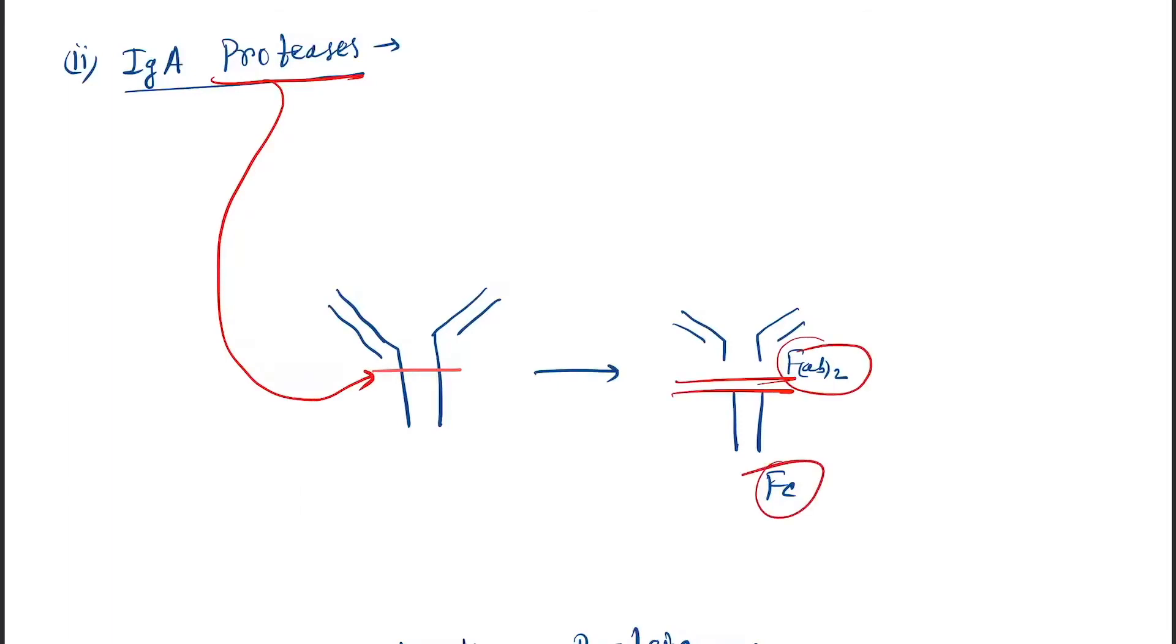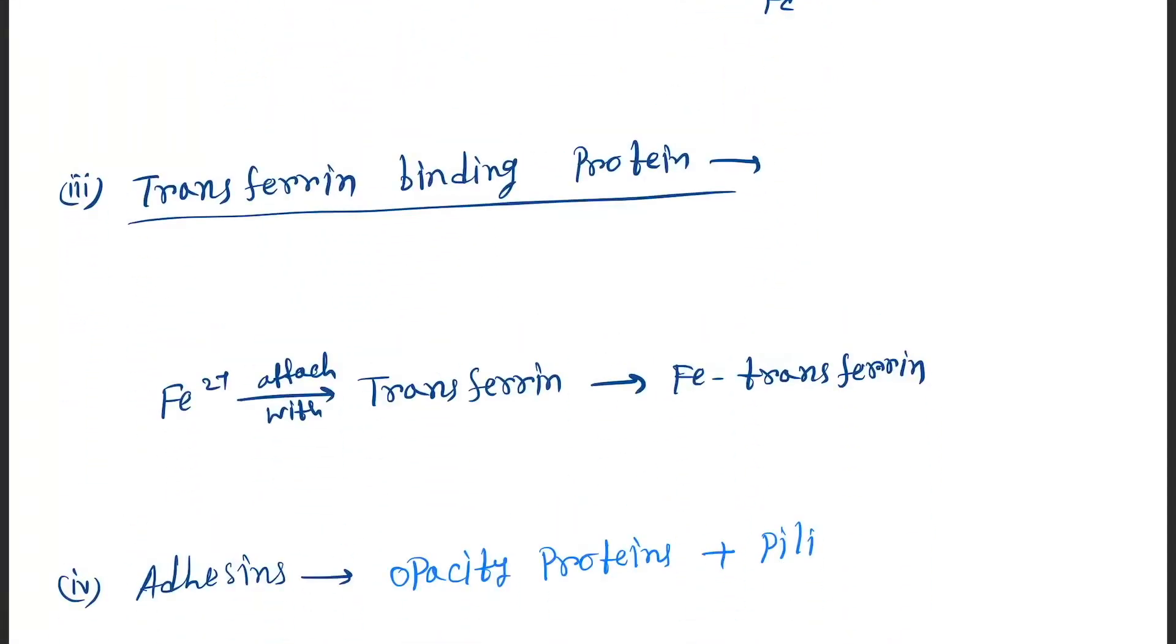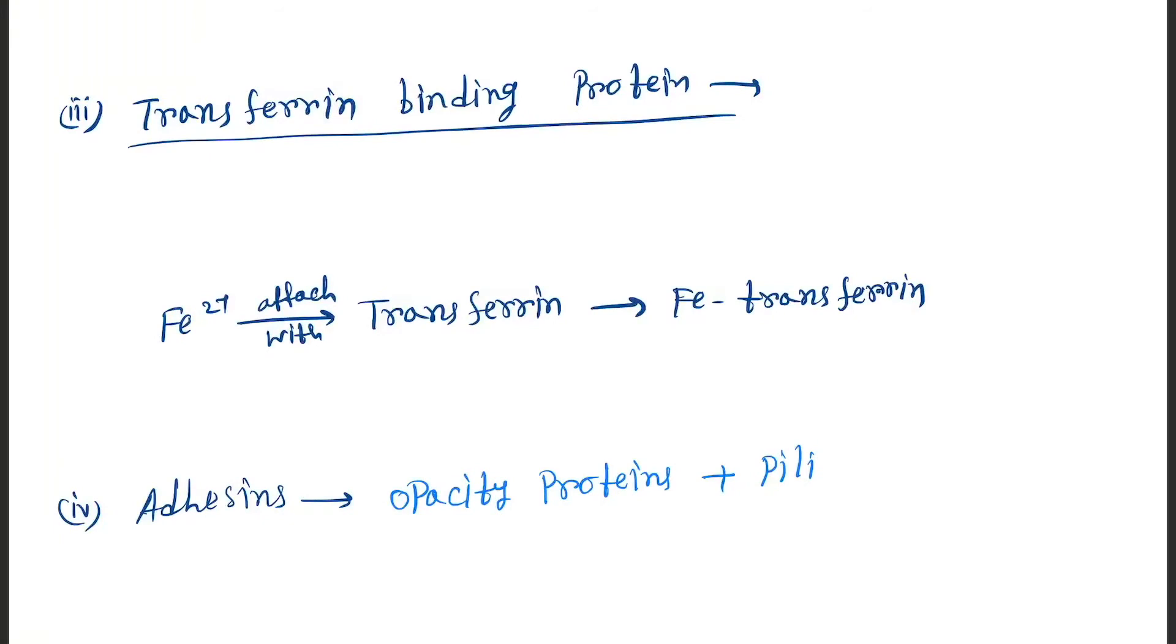Now come to transferrin binding protein. Normally what happens: Fe2+ binds with the transferrin and forms Fe-transferrin, but transferrin binding protein helps separate the iron.